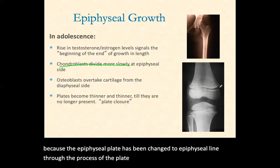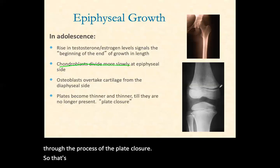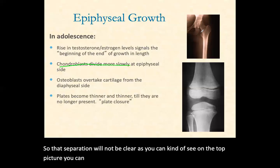Here you can clearly see that the epiphysis and diaphysis are separated from each other, meaning that's cartilaginous tissue. In an adult bone, this line will not be visible because the epiphyseal plate has been changed to an epiphyseal line through plate closure, so that separation will not be clear.